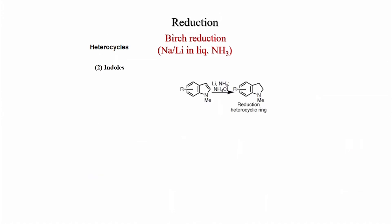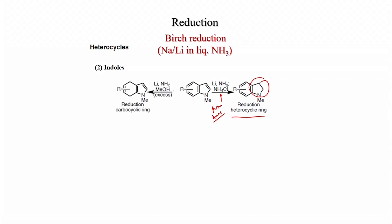Indoles can also be treated under these conditions. N-methyl indole treated with lithium in ammonia and ammonium chloride as proton source undergoes reduction of the heterocyclic ring. When treated with lithium in liquid ammonia and excess methanol as proton source, reduction of the carbocyclic ring is observed, giving an isolated double bond and an N-methyl pyrrole motif alongside a cyclohexyl motif.